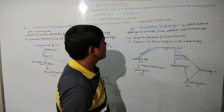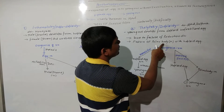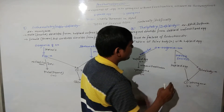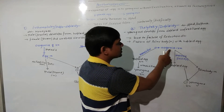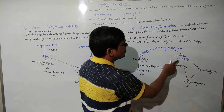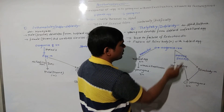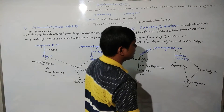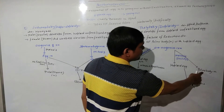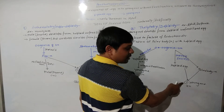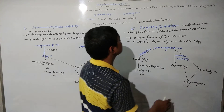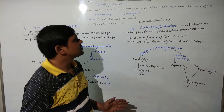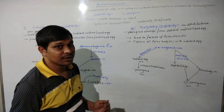In Thelytoky, the diploid egg without fertilization produces the diploid young one. In the second case, the diploid cell from the female side undergoes meiosis successfully, producing a haploid egg cell and also a haploid polar body. When this haploid egg cell fuses with the haploid polar body, it forms a diploid young one. So this is the process of Thelytoky, that is Diploidy, as seen in Aphid, Daphnia, and Honeybee.